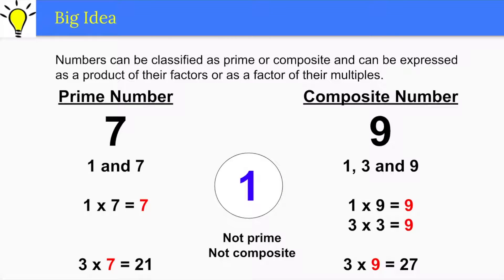The number 1 is neither prime nor composite because it only has one factor, itself. It is the only natural number with this characteristic.